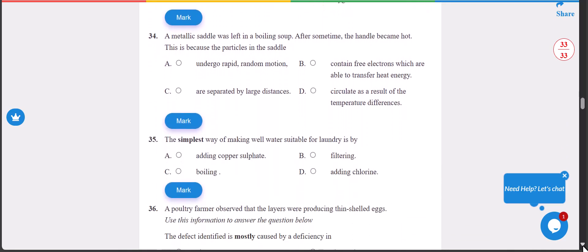Number 34: a metallic ladle was left in boiling soup. After some time the handle became hot. This is because the particles in the ladle undergo rapid random motion. 34 is A.